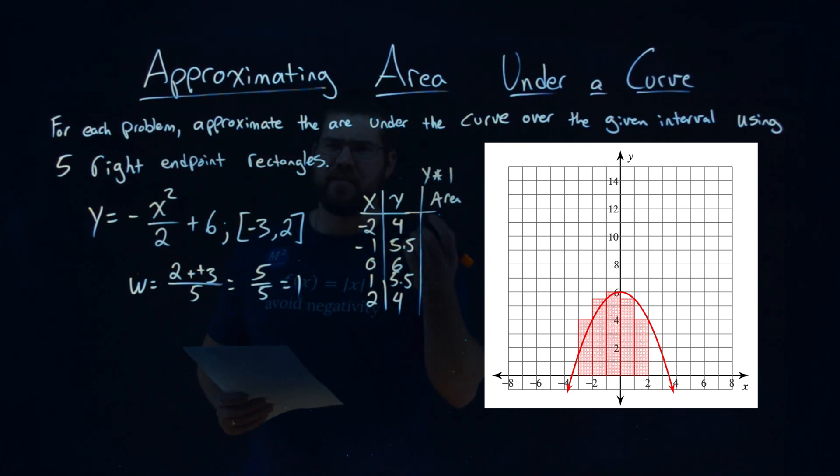4, 5.5, 6, 5.5, and 4. And so now, each area of each rectangle is given right here. To find the overall area, we add them all up.